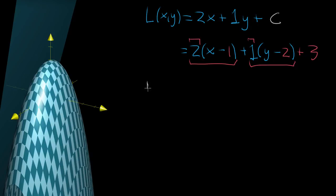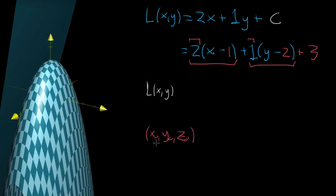Basically, if you want some kind of function which gives you a plane that passes through a certain point, let's say that point is x-naught, y-naught, and z-naught. These are just constant values — this is my way of abstractly describing a single point in space, using x-naught to represent a constant x value, y-naught to represent a constant y value, and so on.